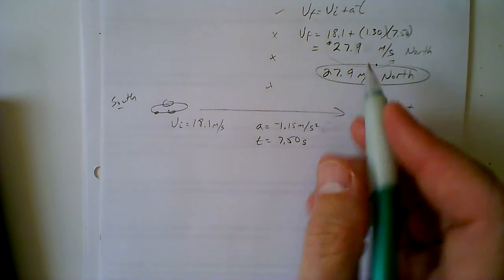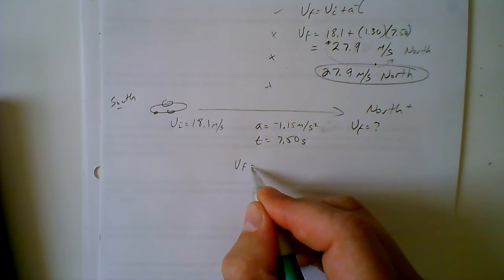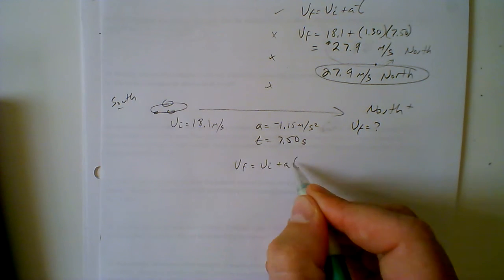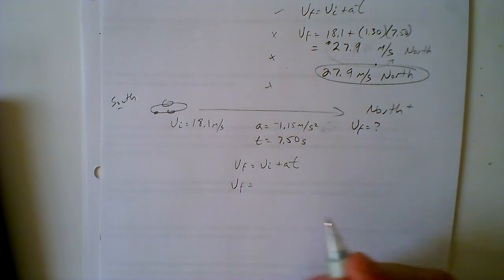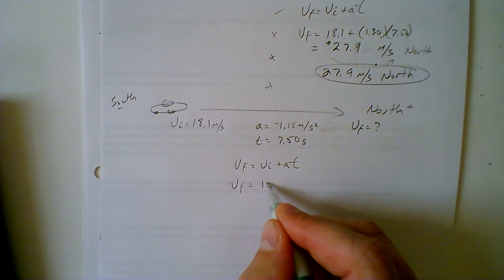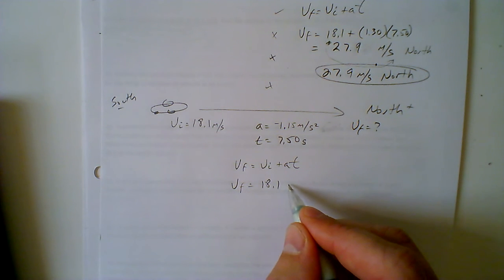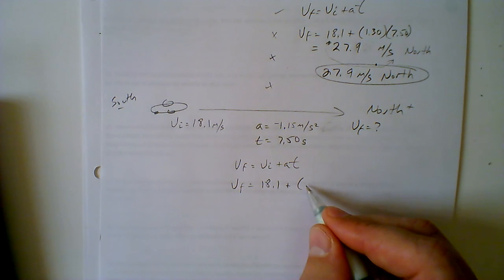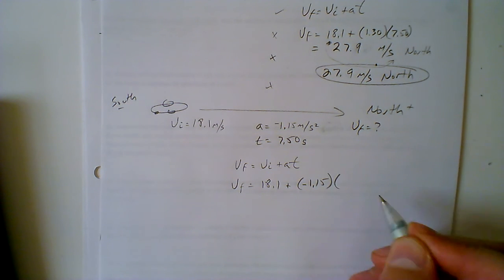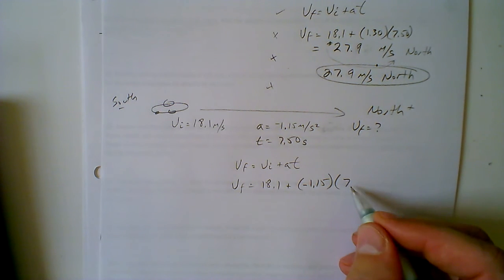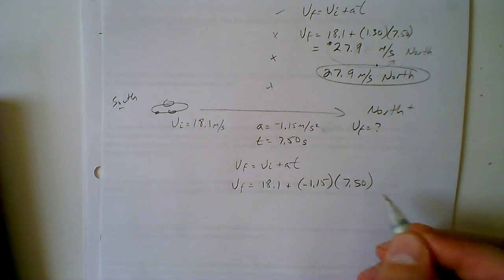Let's do the math, same equation, VF equals VI plus AT. VF, what's the final velocity going to be if you start at 18.1 meters per second and you're going to decelerate, or negative accelerate, at 1.15 meters per second, and that's going to occur for a total of 7.50 seconds.